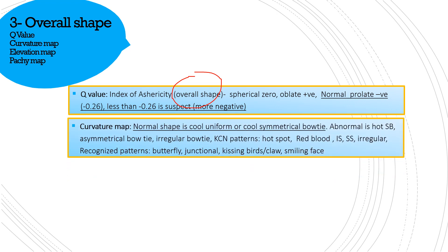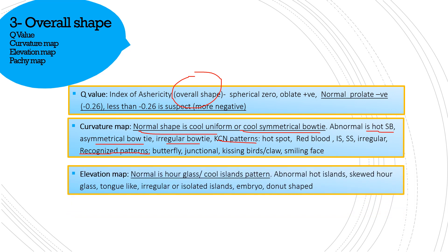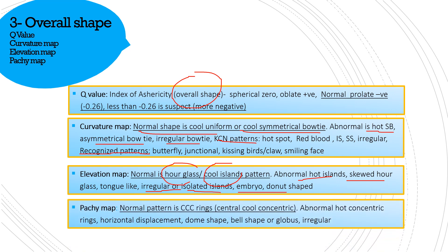Then comes the curvature map. The normal shape is cool uniform or cool symmetrical bow tie. The abnormal shapes are hot symmetrical bow tie, asymmetrical bow tie, irregular bow tie, and some keratoconus patterns we'll discuss in coming slides. The overall shape is also seen on the elevation map, where normal appearances are hourglass and cool eye lens. Abnormals include hot eye lens, skewed hourglass, and irregular isolated eye lens, embryo, or donut shape. On the pachymetry maps, the normal pattern is central cool concentric rings.